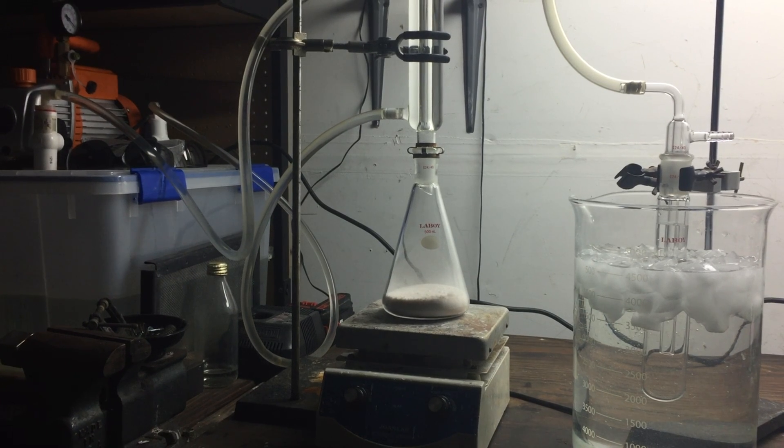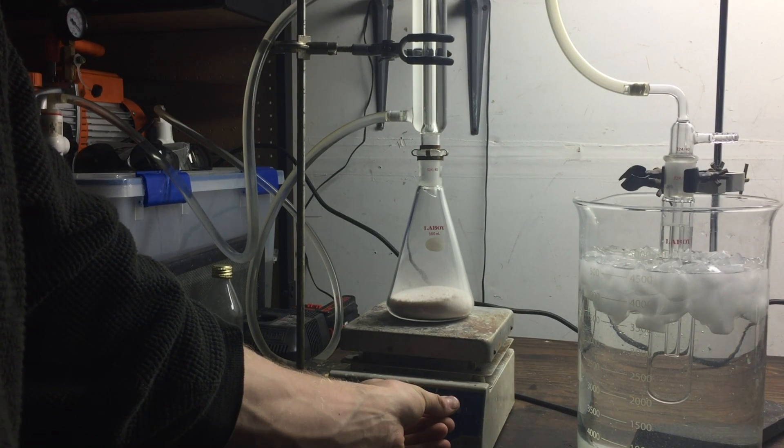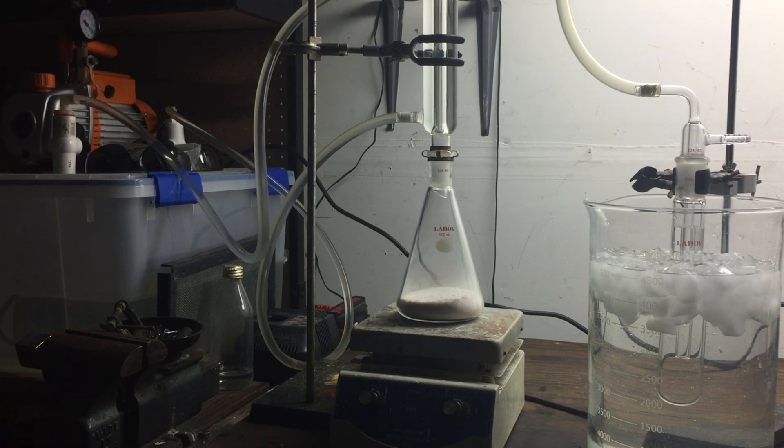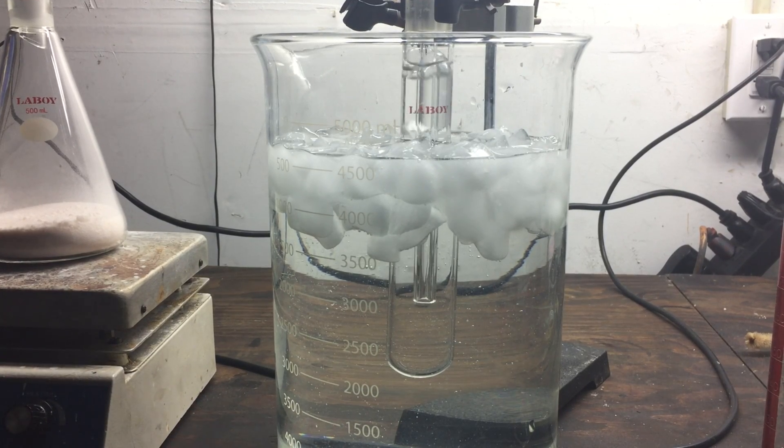I added about 80 milliliters of water to the gas washing bottle on the right, and I turned the hot plate on low. By monitoring the temperature, I maintained a nearly constant rate of bubbling.